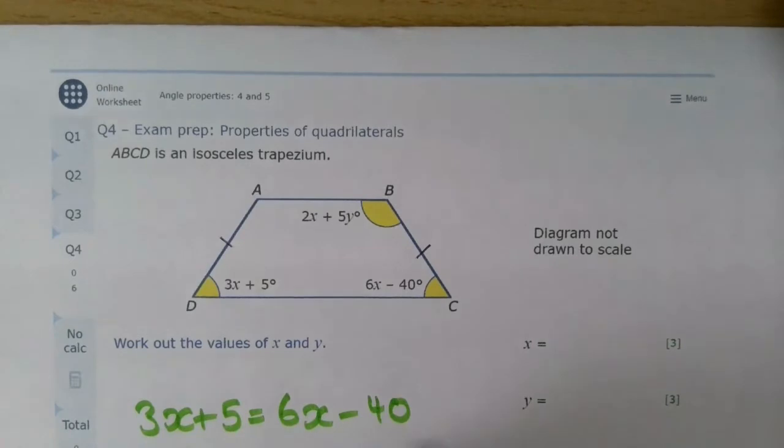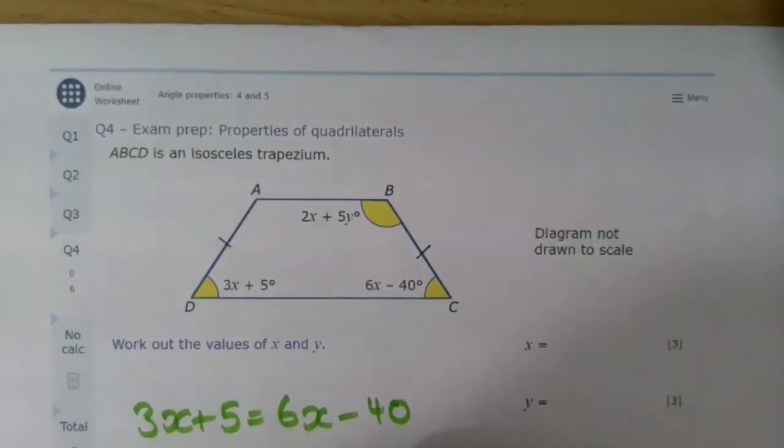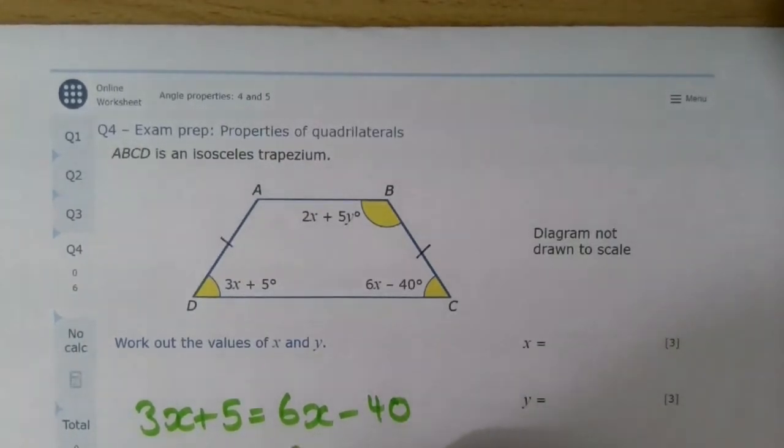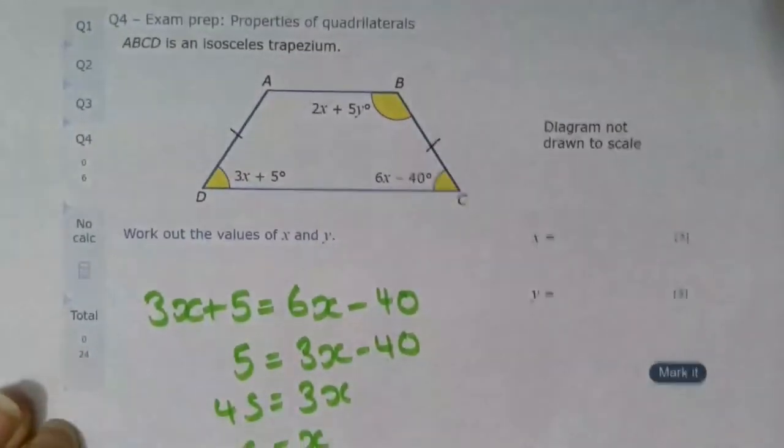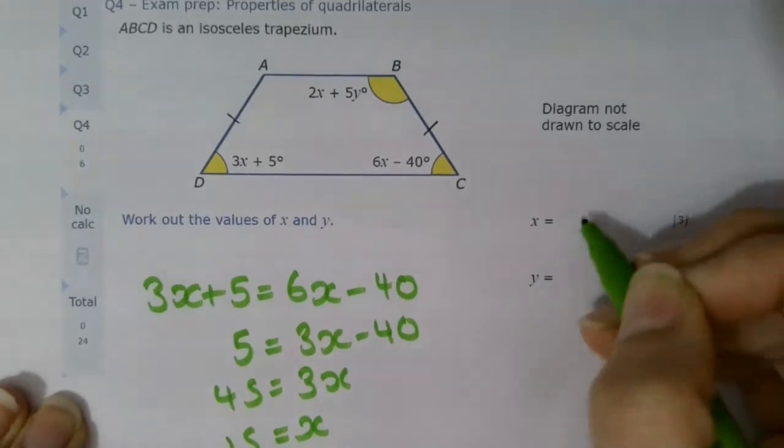By removing the smallest amount of x and then we divide by 3, giving us x is 15.